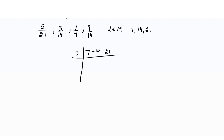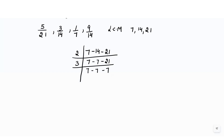We divide with 2: 7 cannot be divided by 2 so we keep 7; 14 divided by 2 is 7; 21 cannot be divided by 2 so we keep 21. Next we divide by 3: 7 stays as 7, 7 stays as 7, and 21 divided by 3 gives 7.